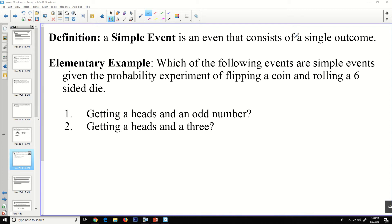Definition: a simple event is an event that consists of a single outcome. The elementary example: which of the following events are simple events, given the probability experiment of flipping a coin and rolling a six-sided die? Getting a heads and an odd number, or getting a heads and a three? Well, getting a heads and an odd number, there are actually three of those outcomes. There's heads one, there's heads three, and there's heads five. This is not a simple event. Getting a heads and a three, there is only one of those outcomes. This one is a simple event.